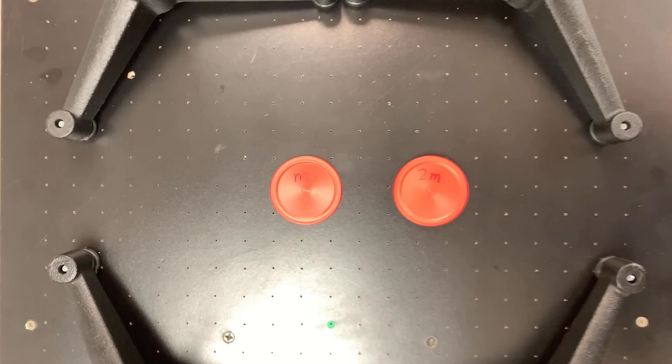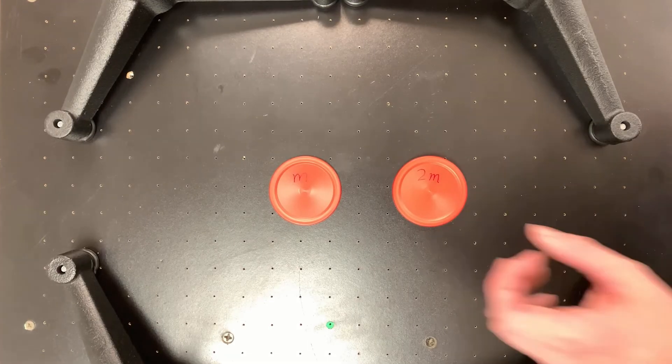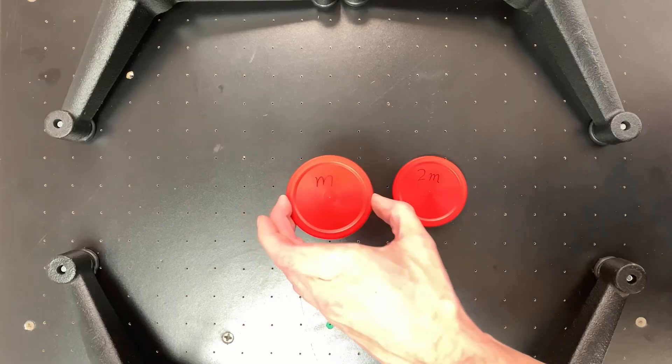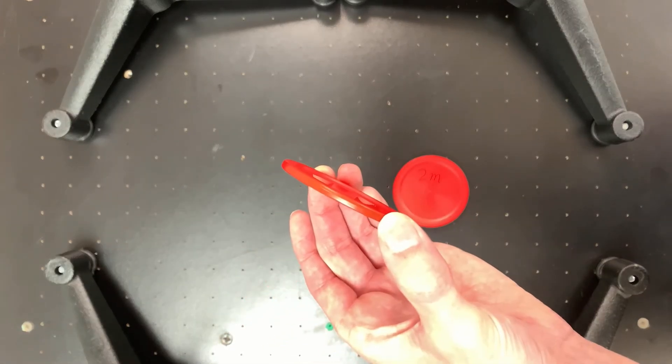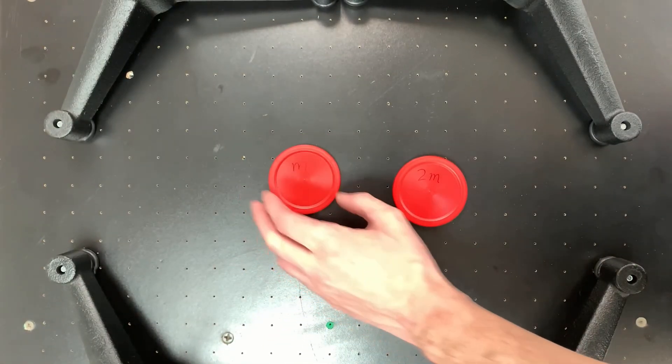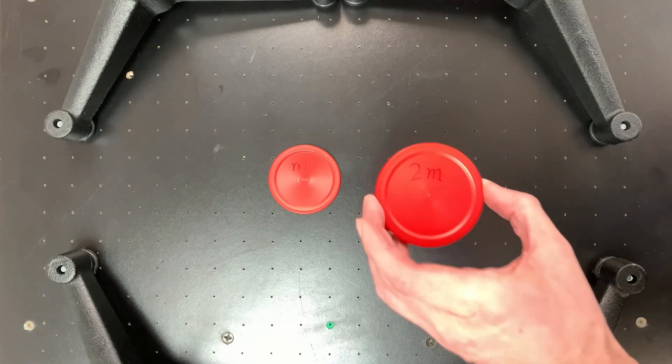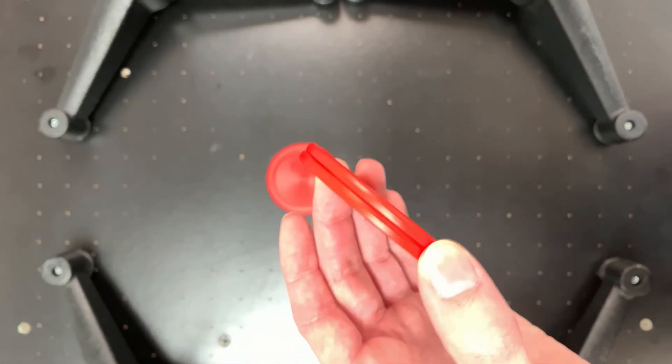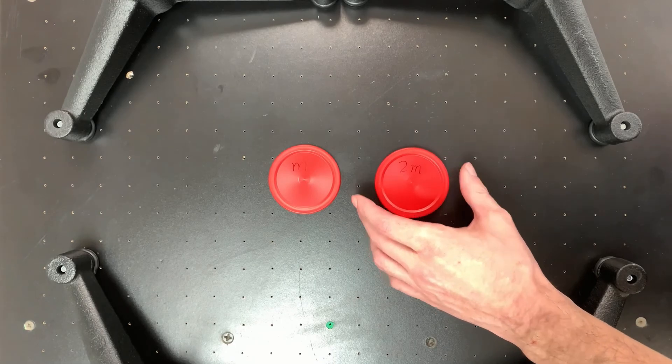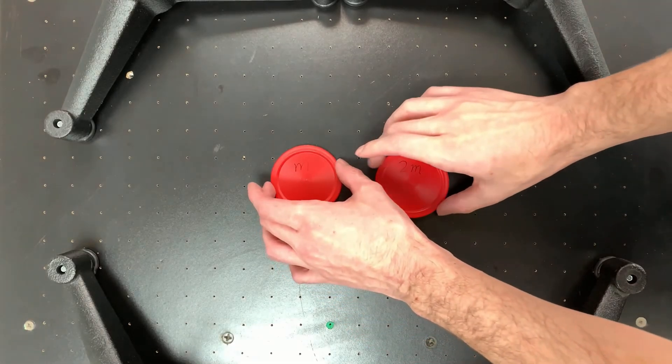Let's look at another case. Here, I'm showing that these two pucks do not have the same mass. The puck on the right, labeled 2M, is actually two pucks that have been super glued together. Let's watch these pucks collide.